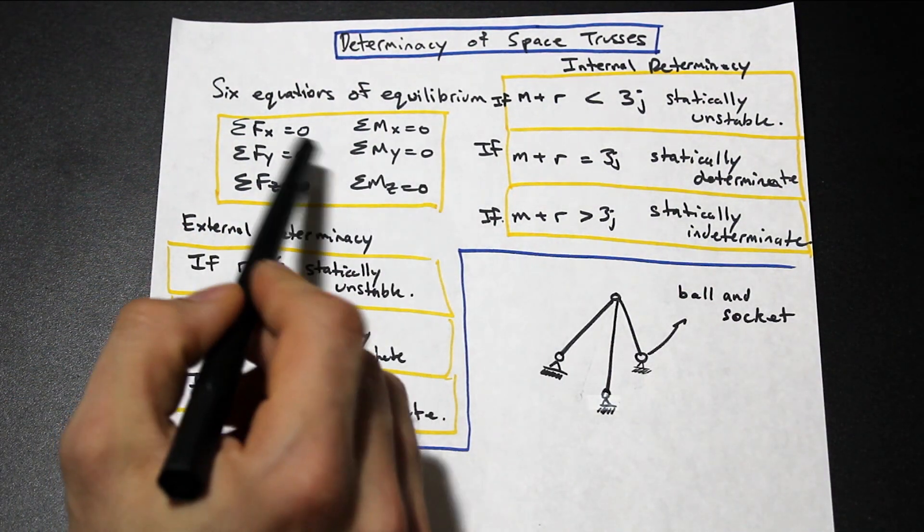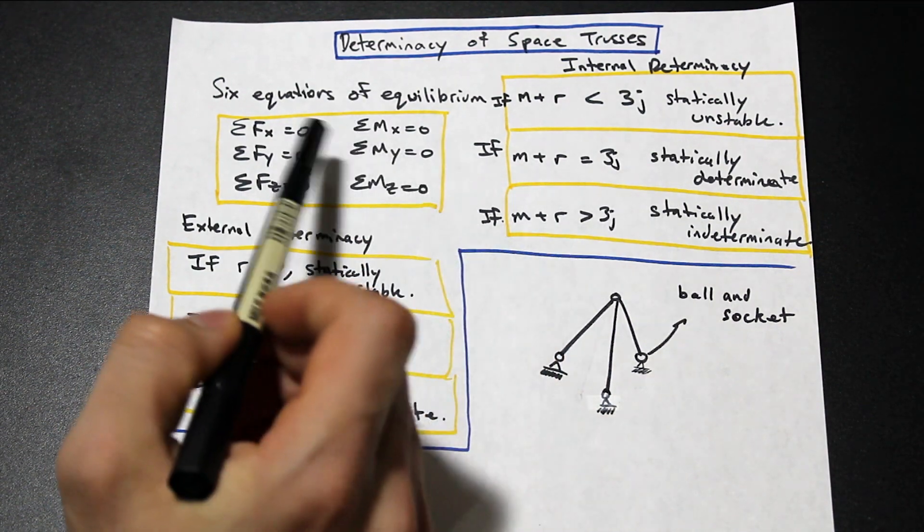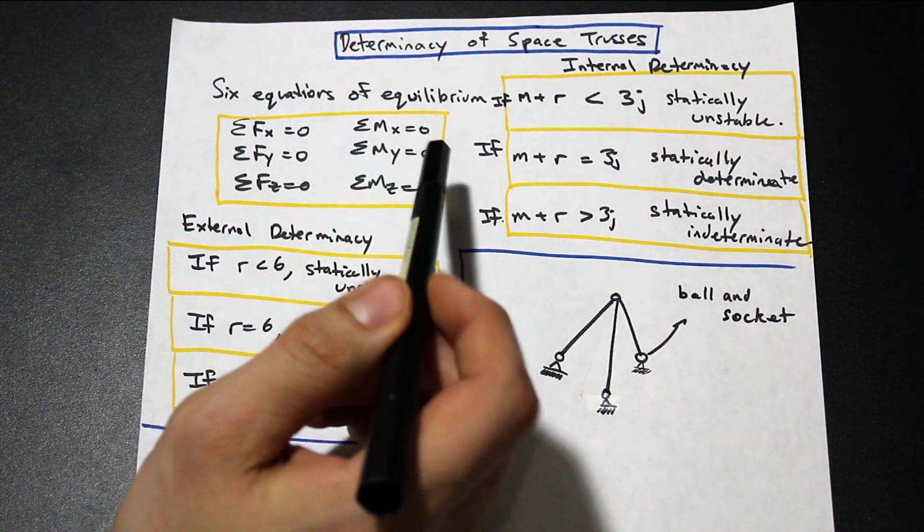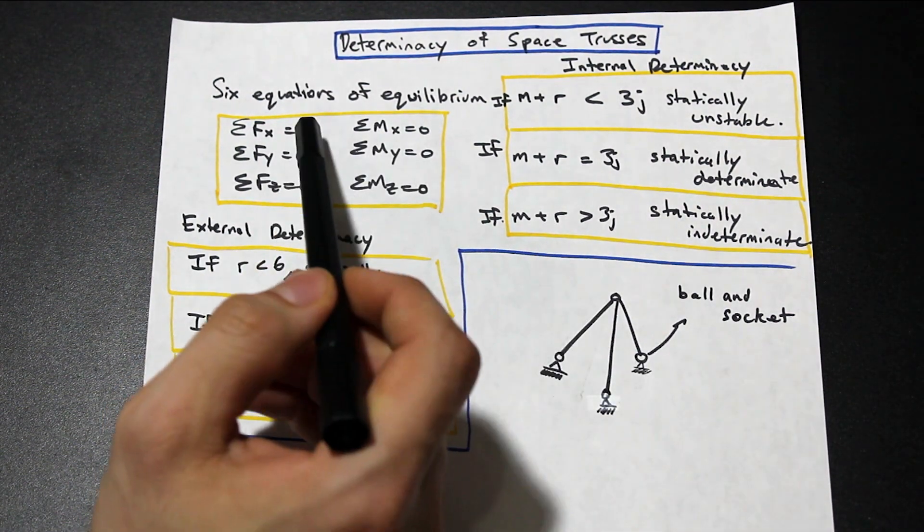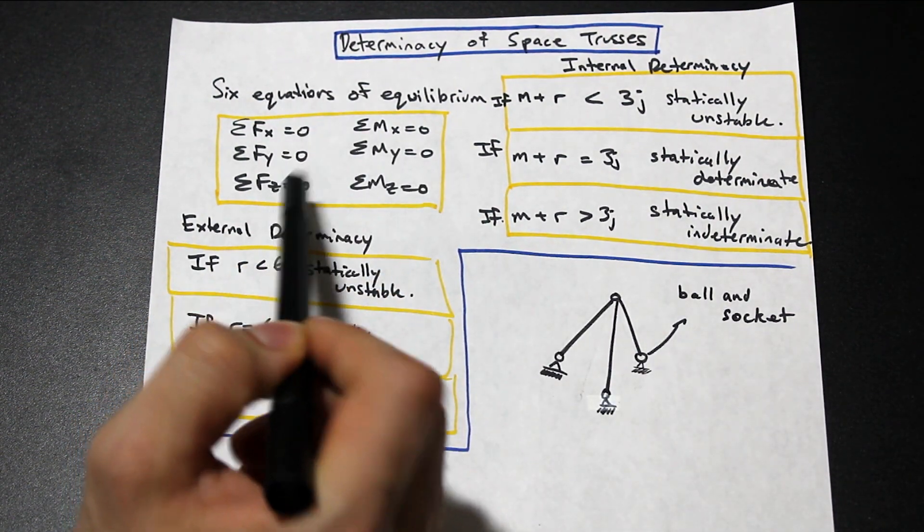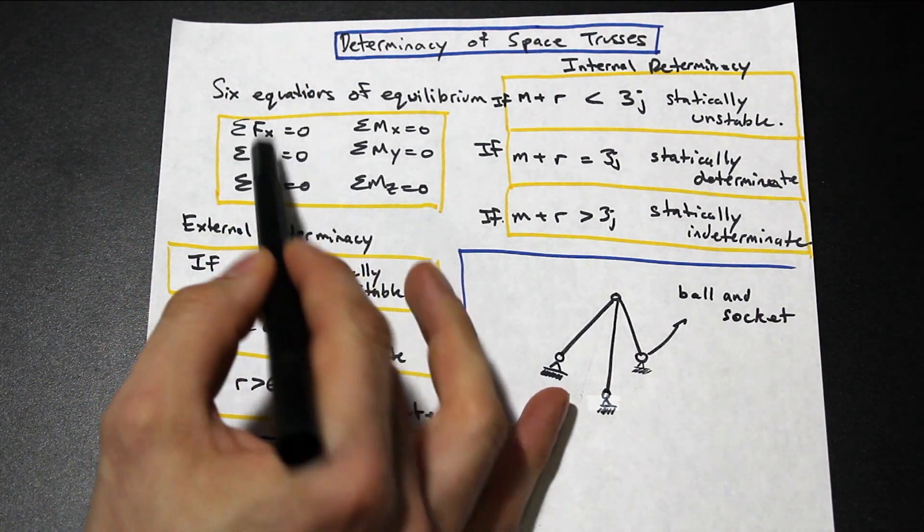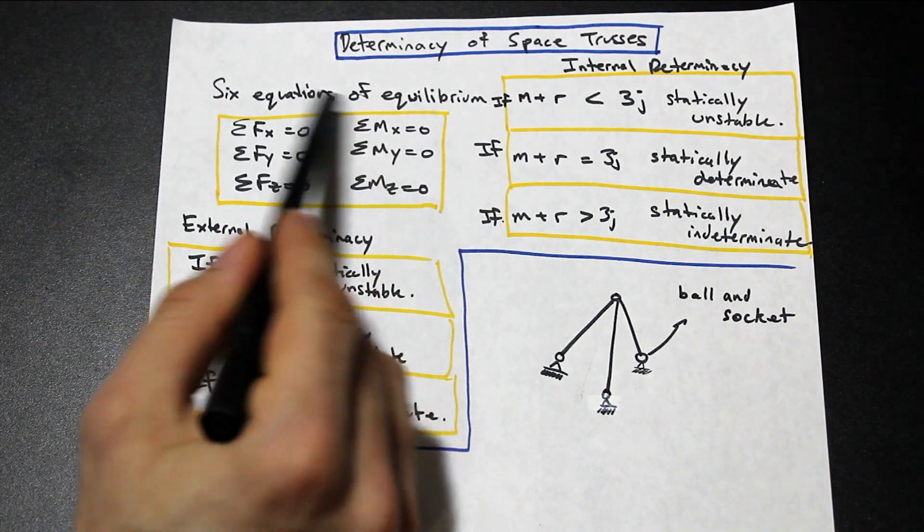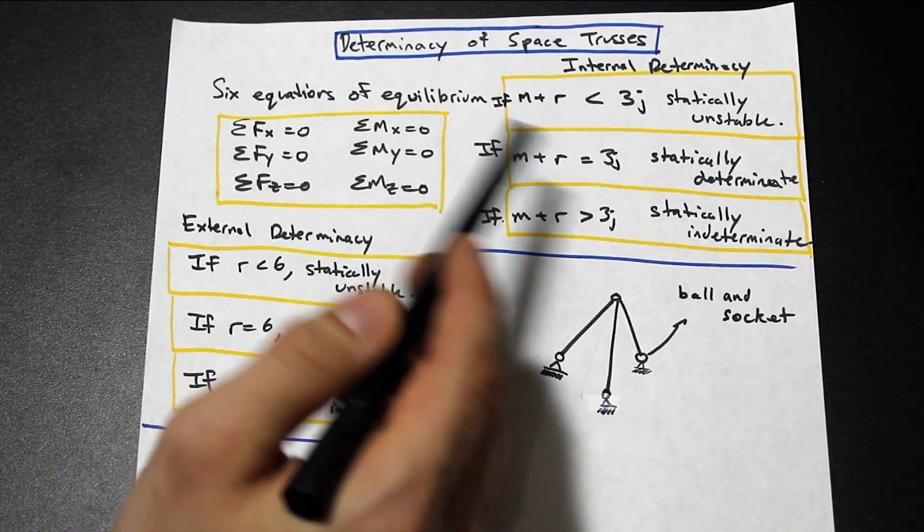In a space truss, now we have six equations of equilibrium. So in any particular joint, we have that throughout the whole truss, we have that the sum of all the forces, and now forces can act in three dimensions, not just two. Moments can also act in three directions, not just one anymore. So now we have six equations of equilibrium.